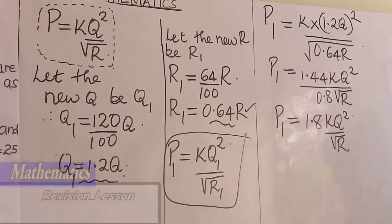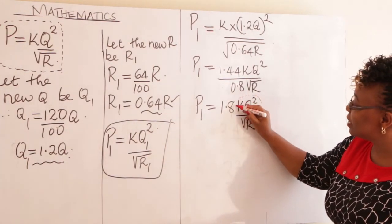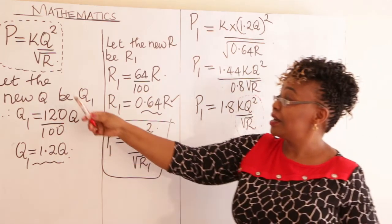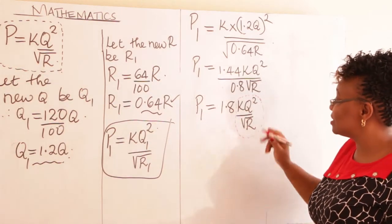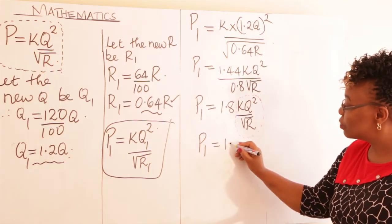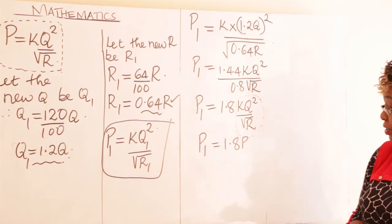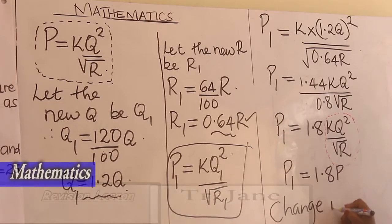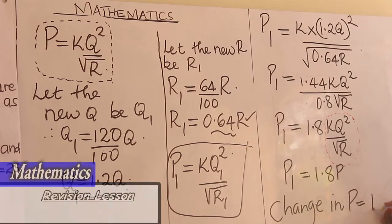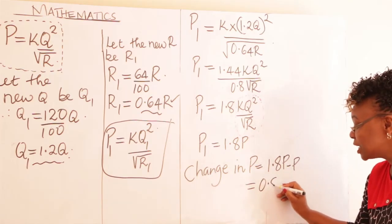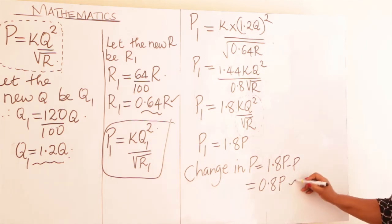Now look at the part KQ²/√R — that is your original P. So replace it: the new P = 1.8 of the old P. The change in P is: new P minus old P = 1.8P − P = 0.8P. This is the change in P.